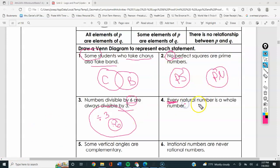Every natural number is a whole number, so every natural number is in the group of whole numbers.